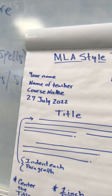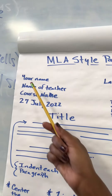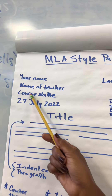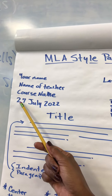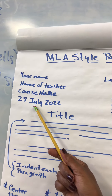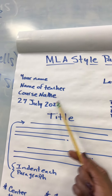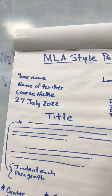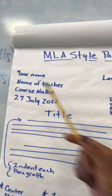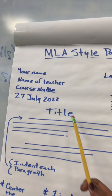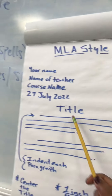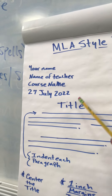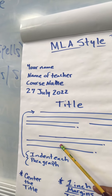So your paper will look something like this. It'll have your name — this is called the header — your name, the name of the teacher, course name, the date with the day first, month and then the year, your last name and page one. If it's page two it'll say page two without any of this. The title is always centered, and the entire paper is double spaced with every paragraph indented.